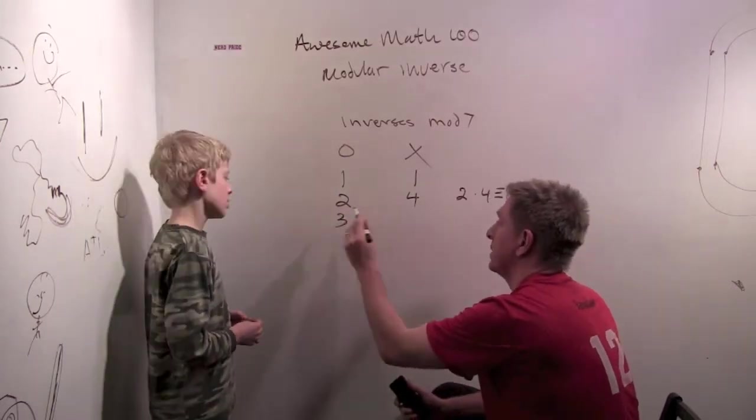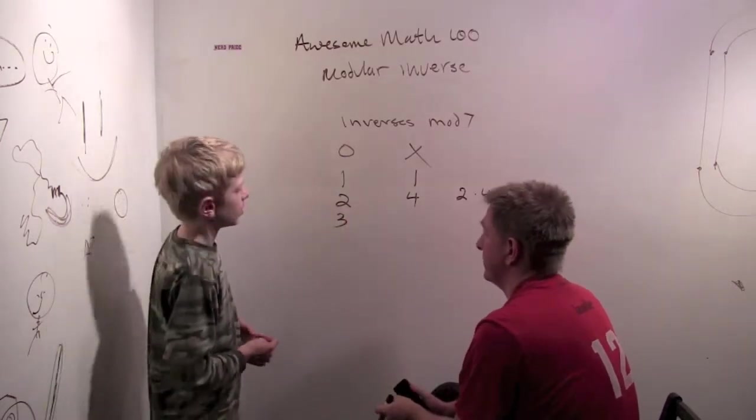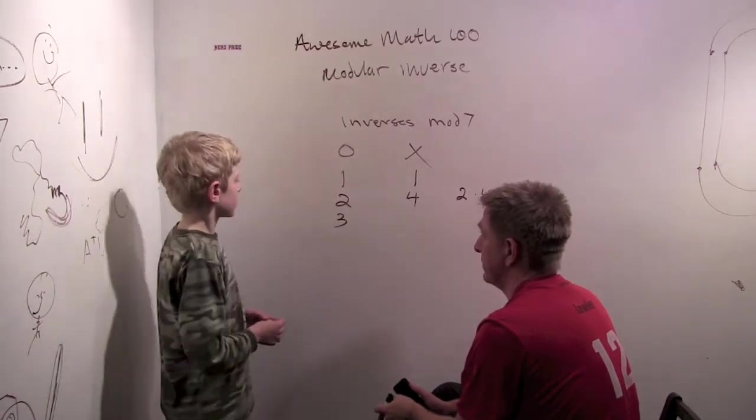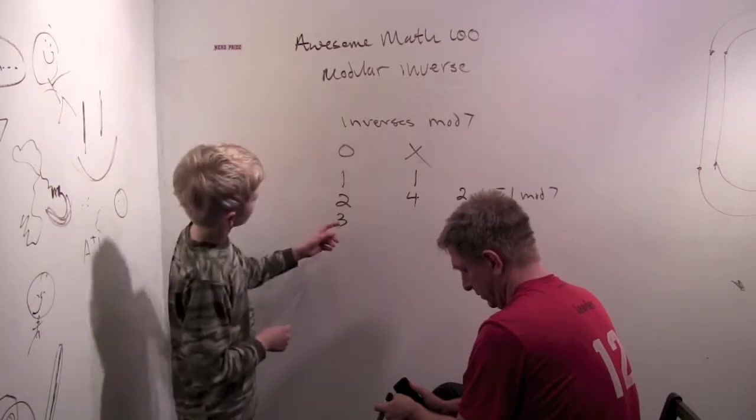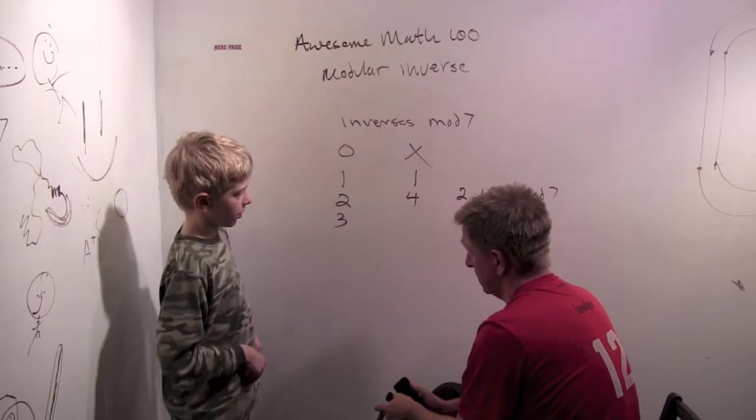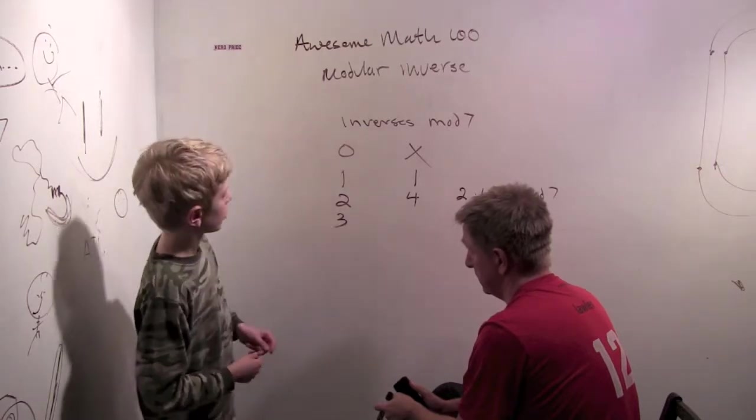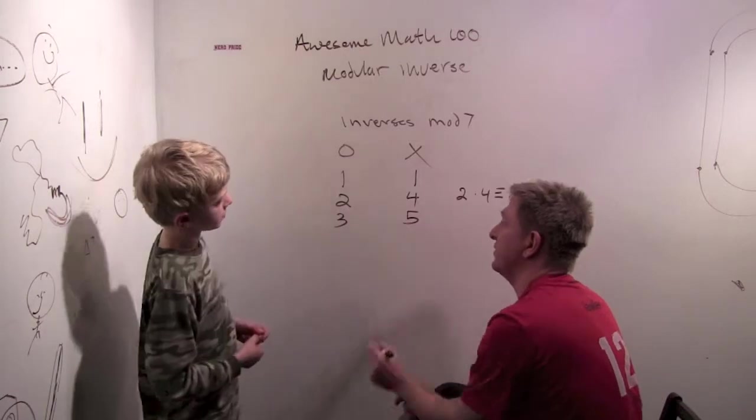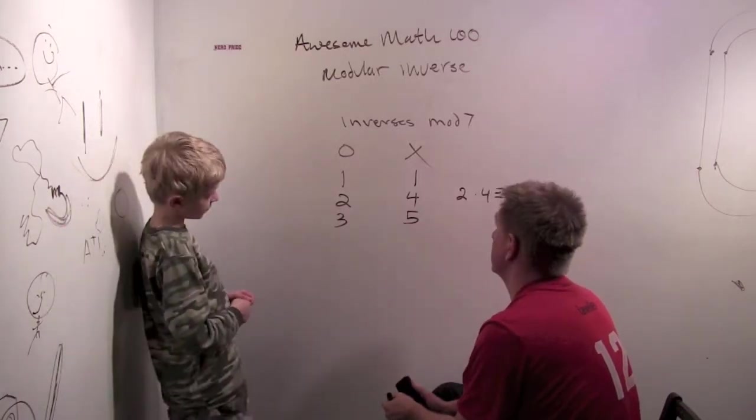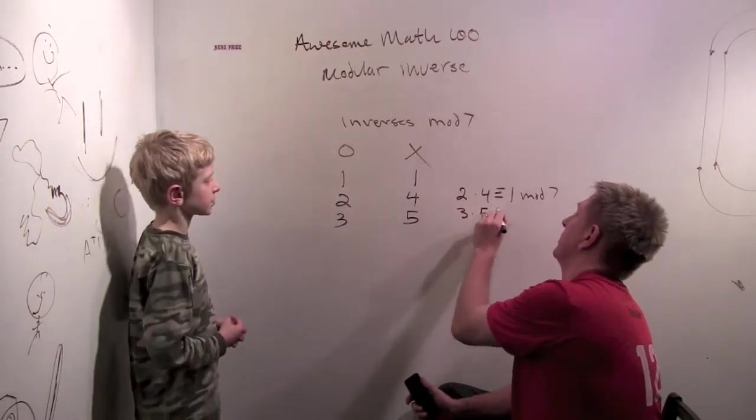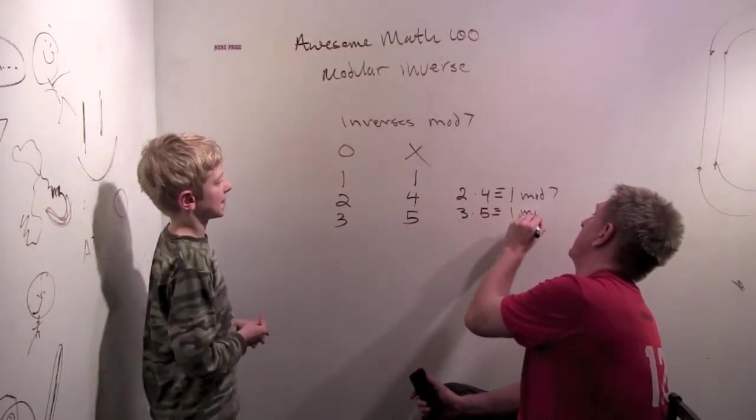What about three? Three, you can't get one more than seven. Though you can get one more, it would be five. The inverse. Interesting. Three times five is fifteen, which is one mod seven. Three times five is congruent to one mod seven.